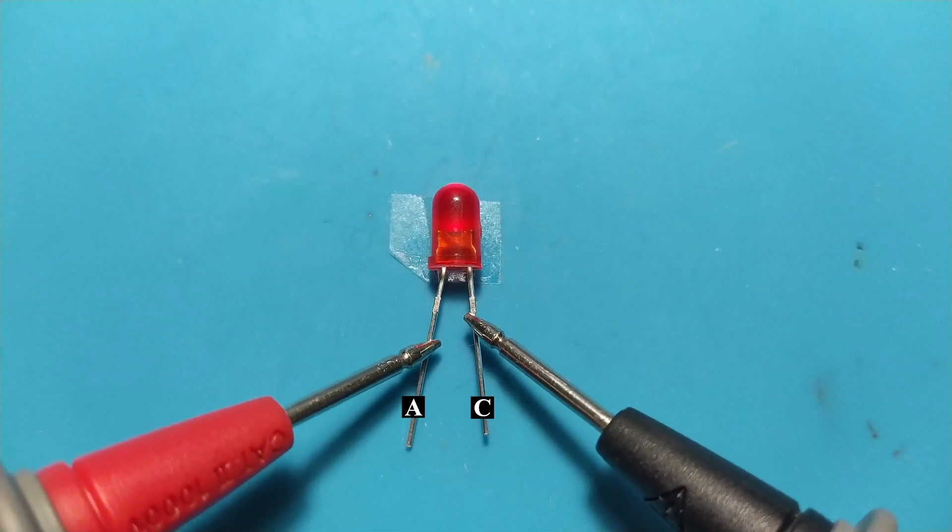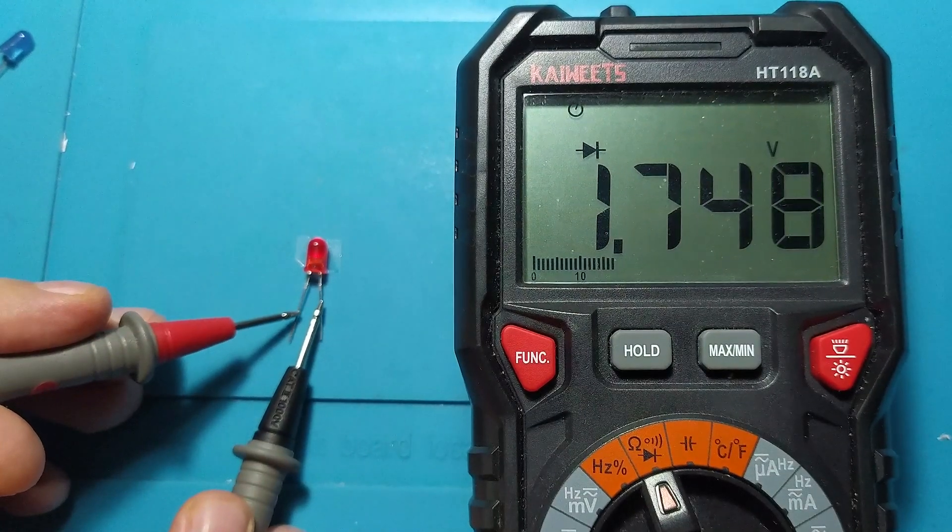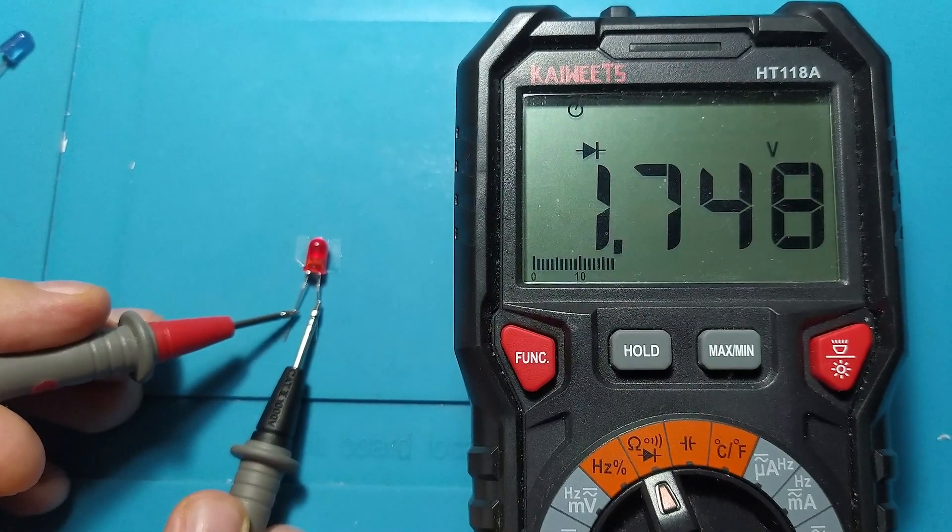With the red probe on the anode and the black probe on the cathode, the LED will light up, and on the screen, we see a voltage drop of about 1.7 volts on the red LED.